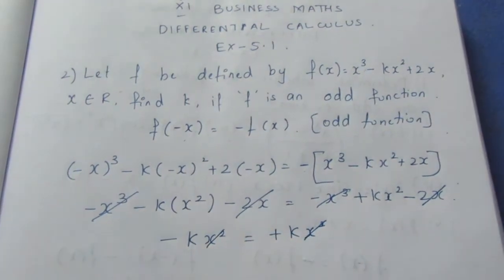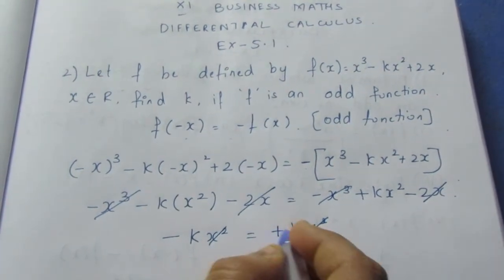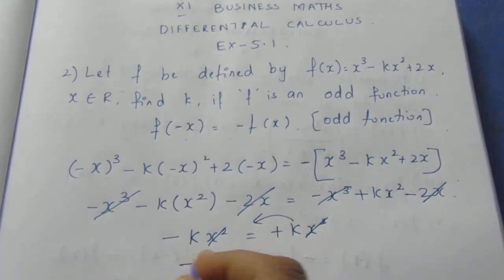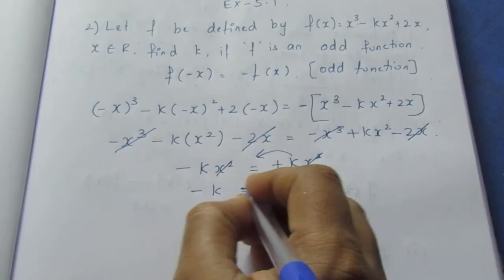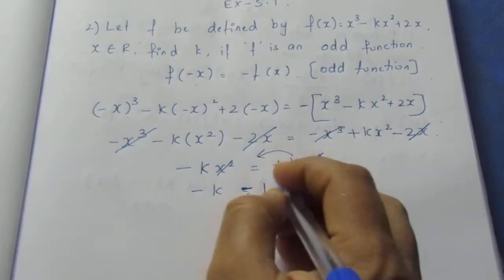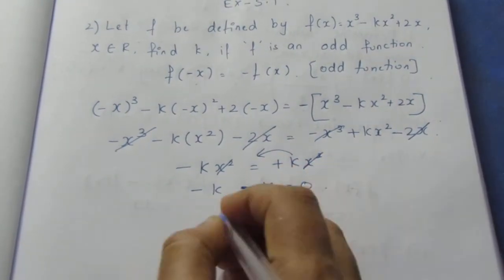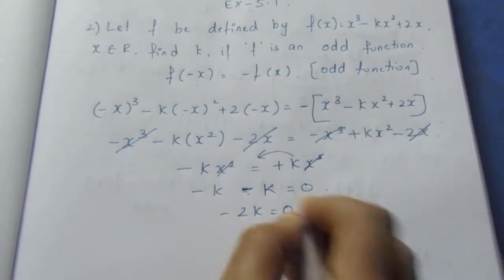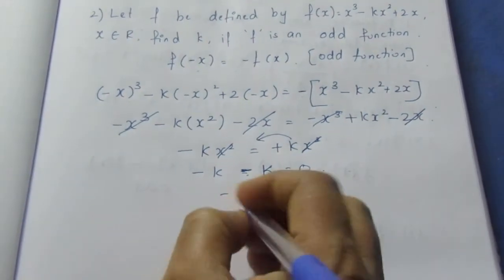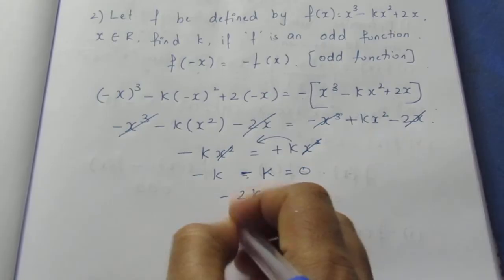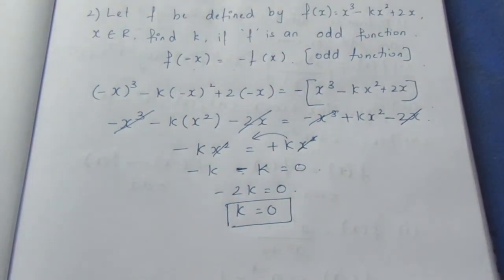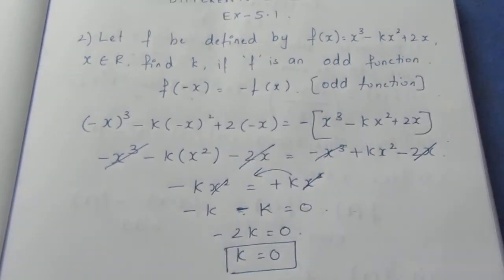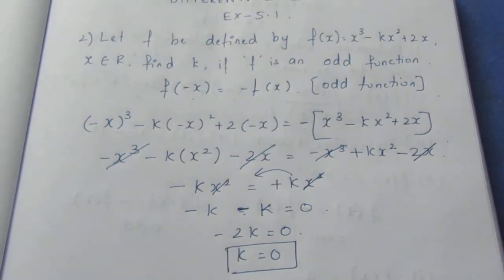The x² terms cancel only when the coefficients match: -k = k, so -2k = 0, which gives k = 0. Therefore the value of k is zero.